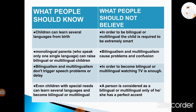Here are the facts that show what people should know: children can learn several languages from birth; monolingual parents who speak only one language can raise bilingual or multilingual children; also, bilingualism and multilingualism don't trigger speech problems or delay; and even children with special needs can learn several languages and become bilingual or multilingual. What people should not believe: in order to be bilingual or multilingual, the child is required to be extremely smart; bilingualism and multilingualism cause problems and confusion; watching TV is enough to become bilingual or multilingual; and a person is considered bilingual or multilingual only if he or she has a perfect accent.